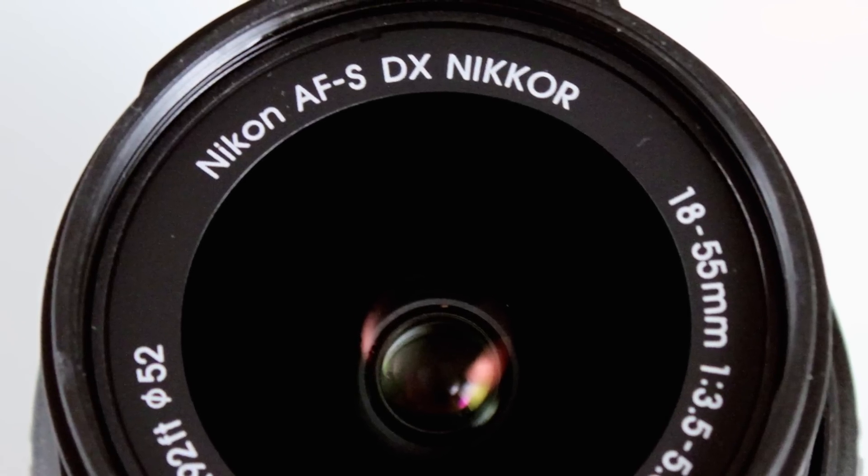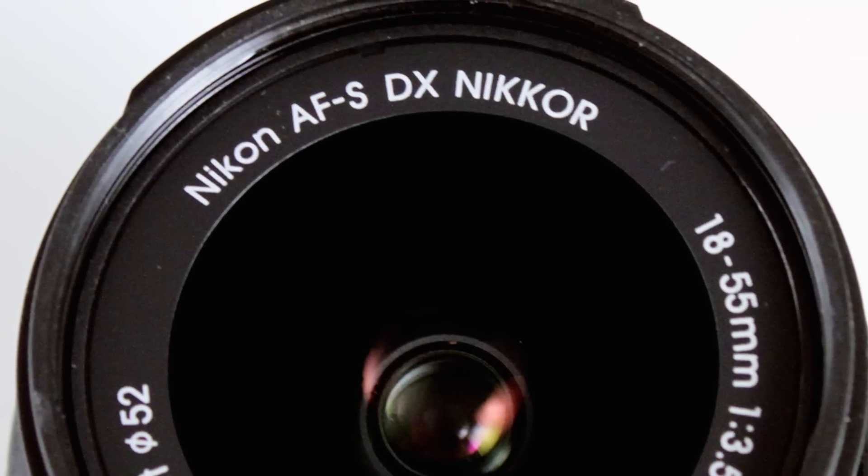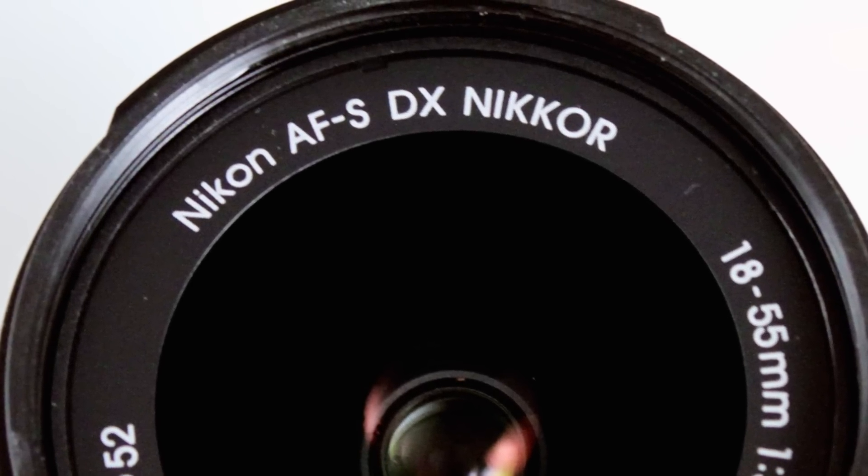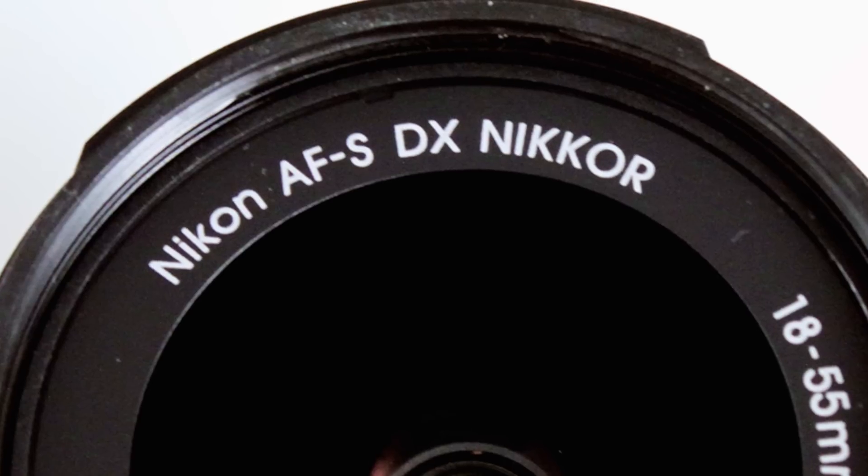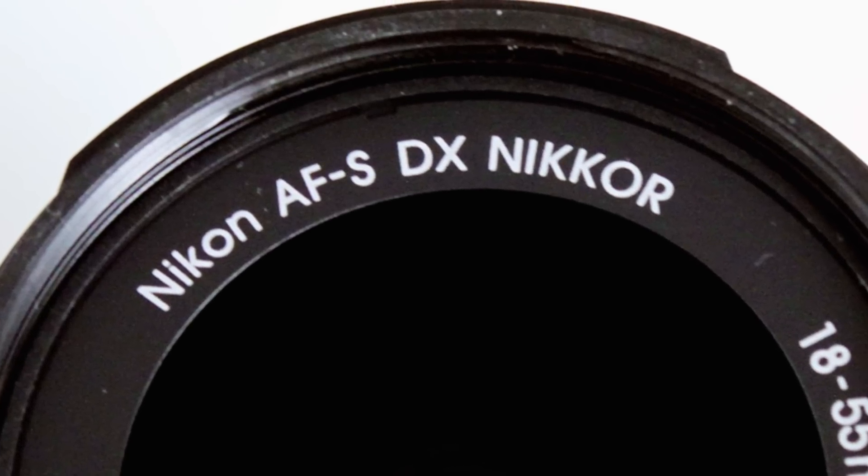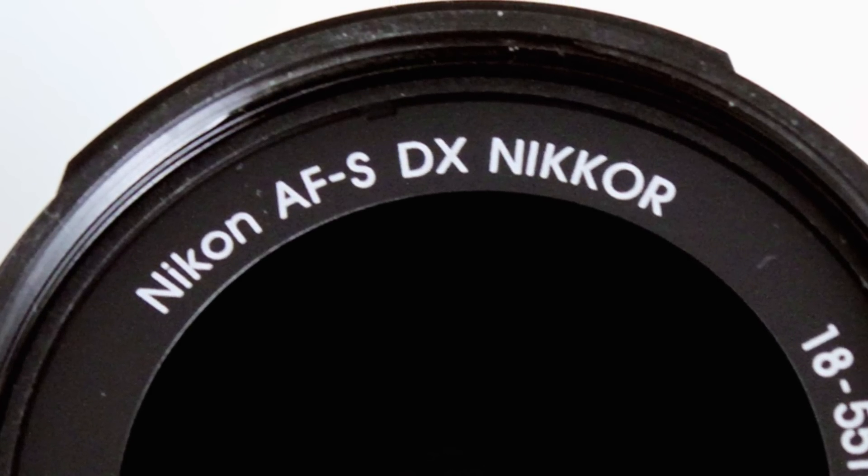It says AF-S. Now, don't forget, don't get confused between the EF-S on Canon. This is an AF-S Nikkor DX lens.